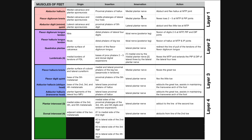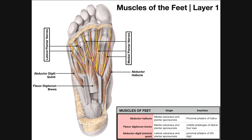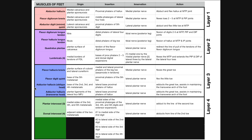In terms of the innervation of all these muscles, in this layer we've got three medial plantar nerves and two lateral plantar nerves. Every single intrinsic muscle of the foot is going to be innervated either by the medial plantar nerve or the lateral plantar nerve. Rather than go through the innervations now, I'm going to come back to that at the end of the video because there's a certain rule that makes the innervations really simple.